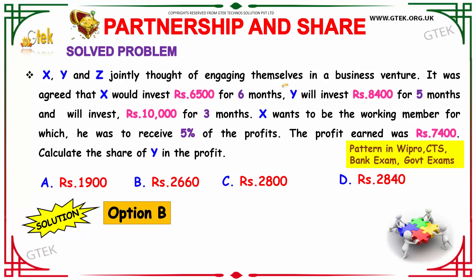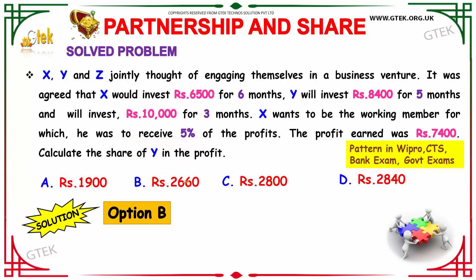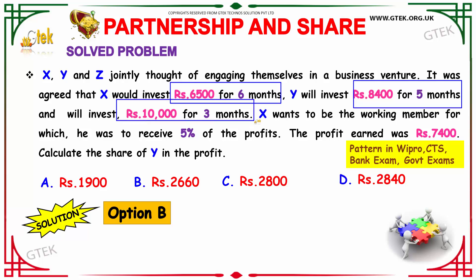Moving to the next problem with X, Y, Z. They jointly engaged themselves in a business venture. X invested Rs. 6,500 for 6 months, Y invested Rs. 8,400 for 5 months, and Z invested Rs. 10,000 for 3 months. X wants to be the working member, for which he received 5% of the profit. The total profit earned was Rs. 7,400. What is Y's profit?